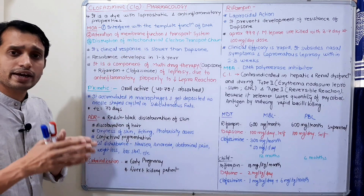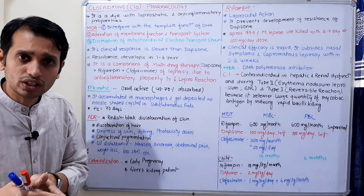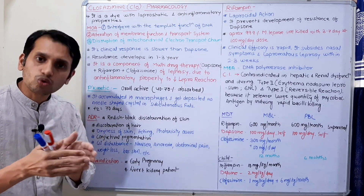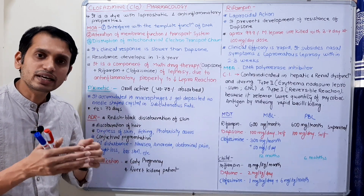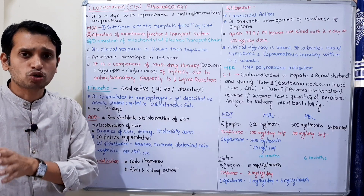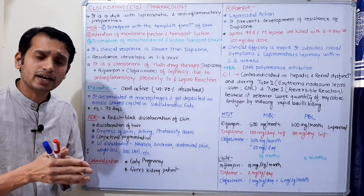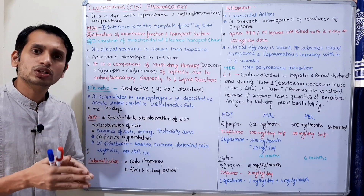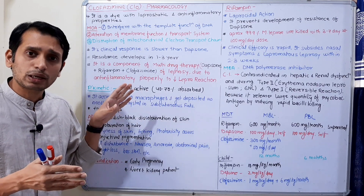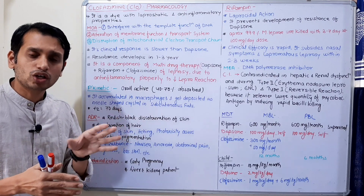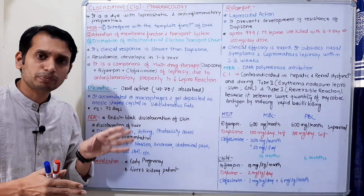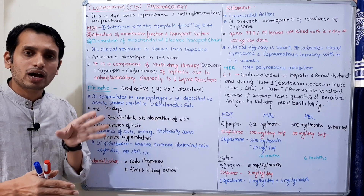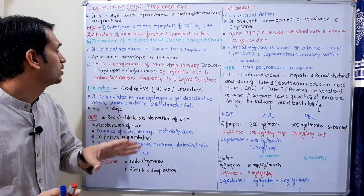Clofazimine has leprostatic properties, meaning it inhibits the growth of Mycobacterium leprae but does not kill it — similar to Dapsone, which is also a leprostatic drug. In addition, it has anti-inflammatory properties, which are very helpful in leprosy therapy because chronic inflammatory reactions occur during leprosy treatment, and Clofazimine can reduce those reactions. It is also helpful in multi-drug therapy.